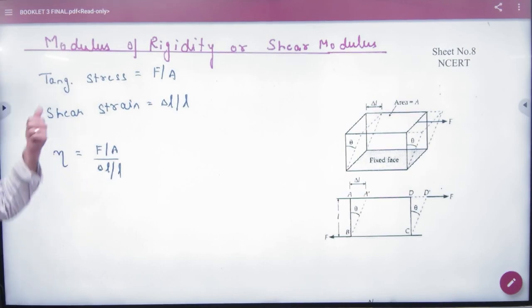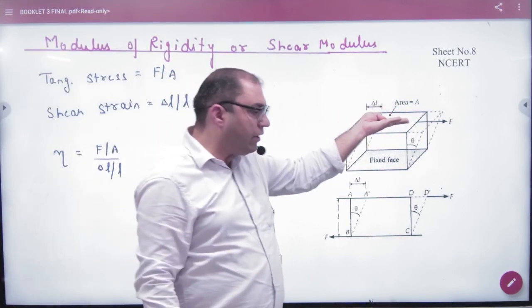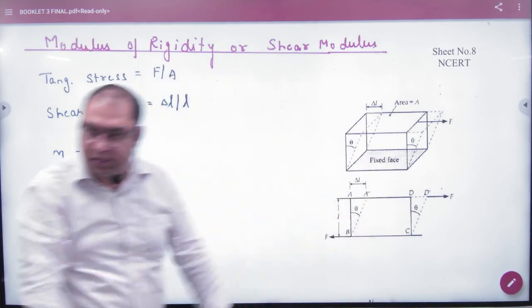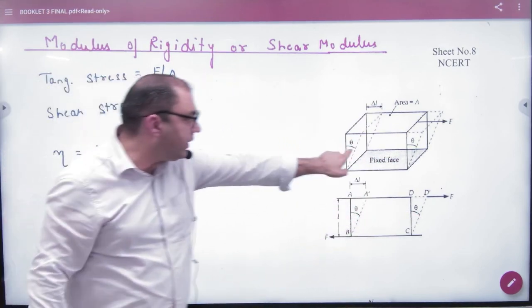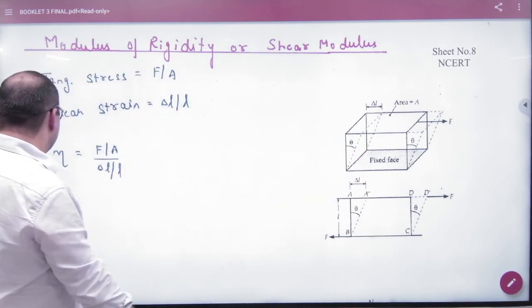Now what will be tangential stress? Force upon area. Force is tangential and area will also be taken tangential area. Force by area. And what will be strain in it? Theta.